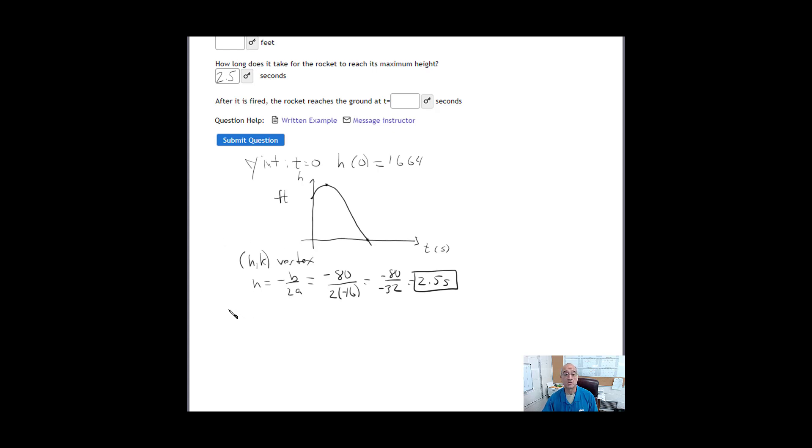Alright, so our maximum height will occur where our function h evaluated at 2.5 seconds. So our function there was negative 16 times t squared, 2.5 squared, plus 80 times 2.5, plus 1664. You plug that in your calculator and you end up with 1764 feet. So that is the maximum height.